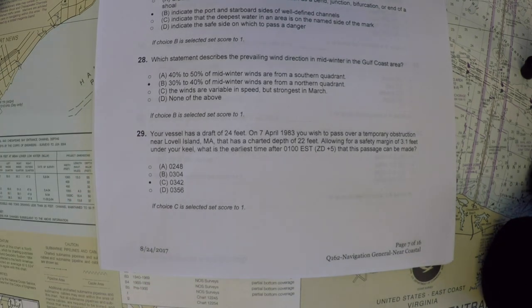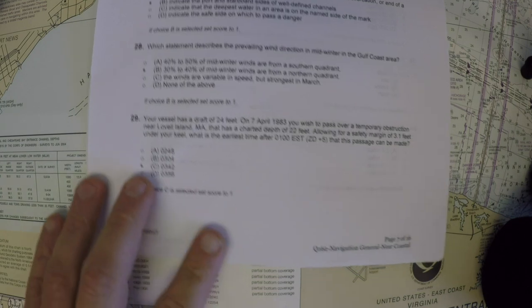Your vessel has a draft of 24 feet. On the 7th of April, you want to pass over a temporary obstruction near Lovell Island, Mass. It's got a charted depth of 22 feet. So allowing for a safety margin, what time after one o'clock can you make this passage? You can see the choices there.